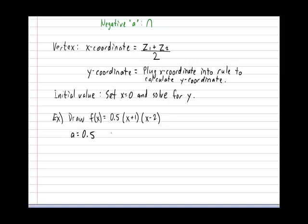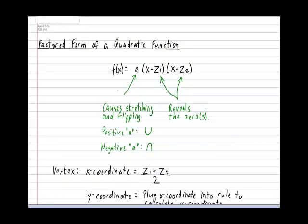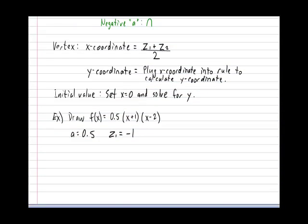Now be very, very careful here. The first zero, z1, occurs at x equals minus 1. Why minus 1? Because be very, very careful about the fact that in our rule it is x subtract the zero.